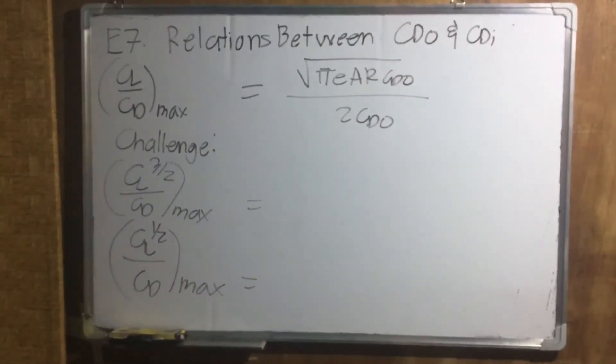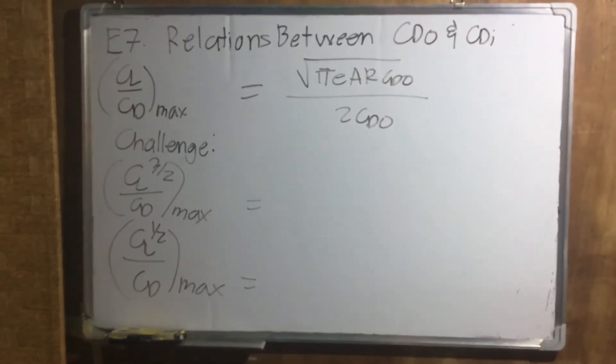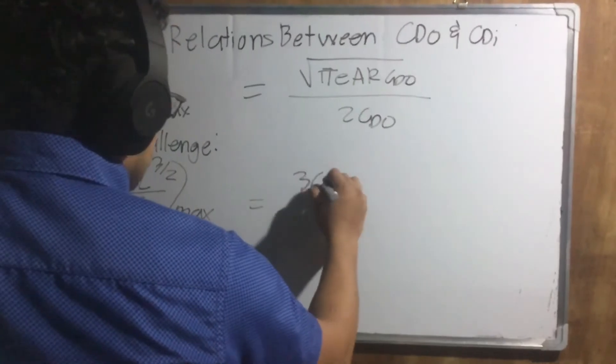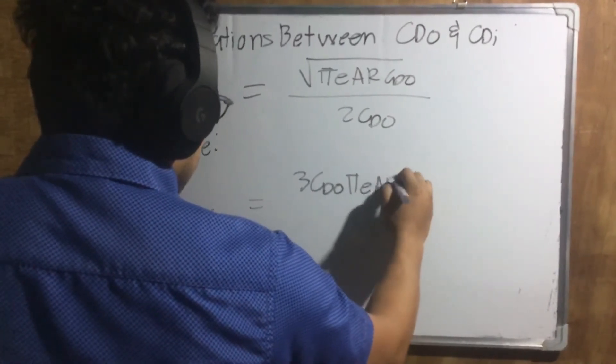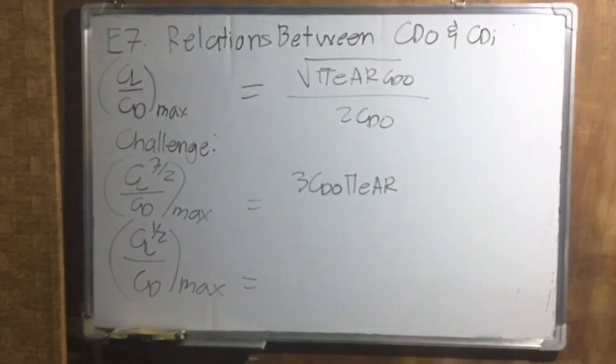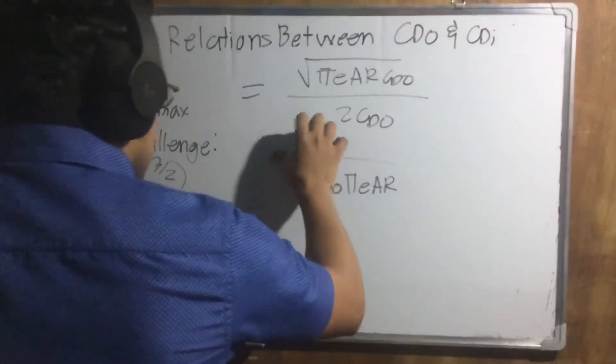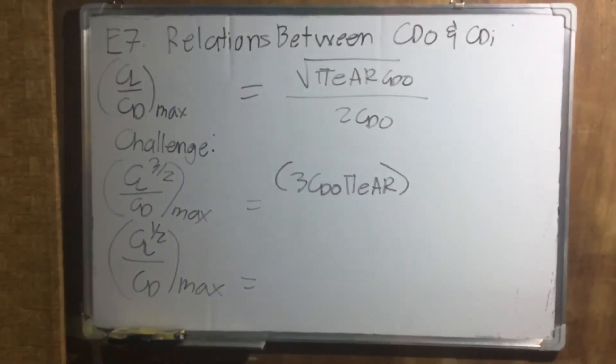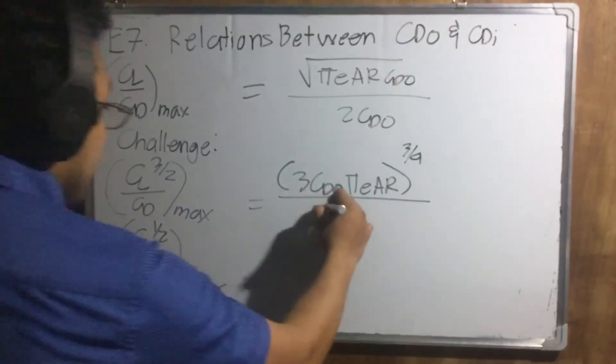Derive that. And you will get, so you have a checker. What you'll get there, for CL three halves max, square root of 3 CDO pi E AR, raised to three fourths over 4 CDO. That's correct.